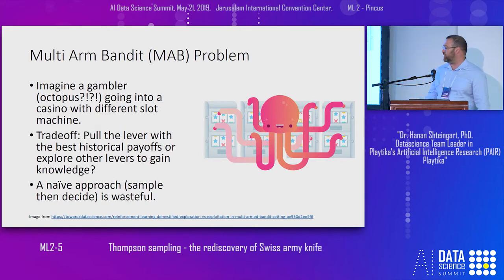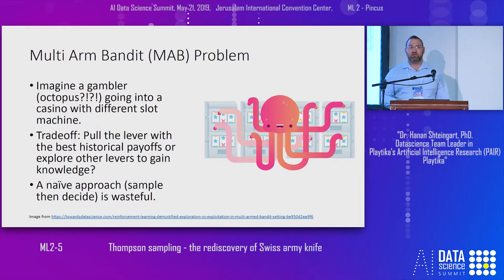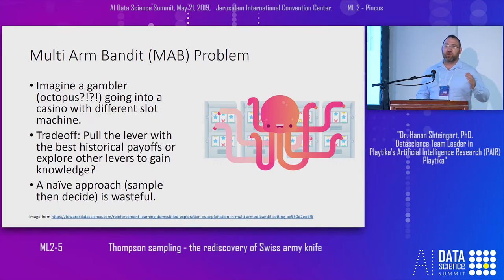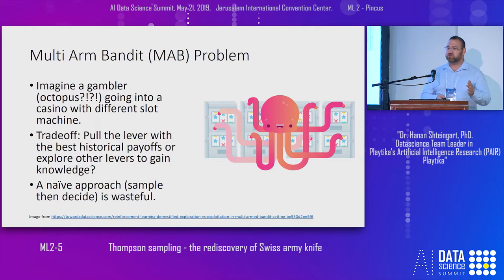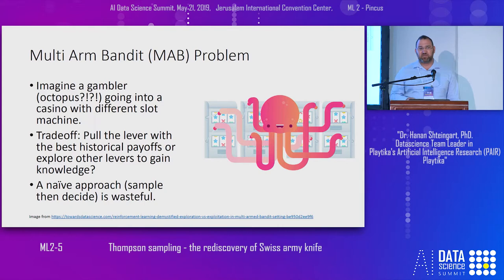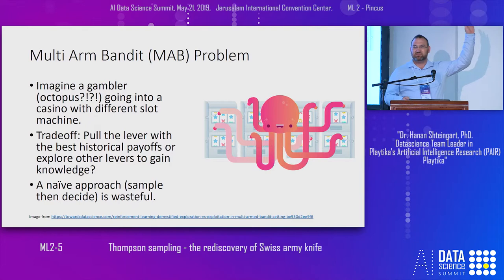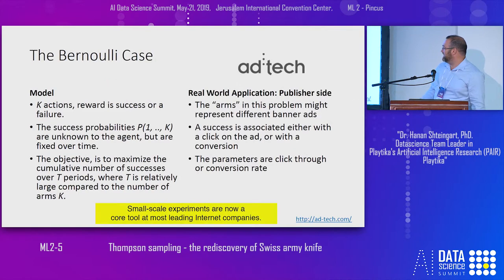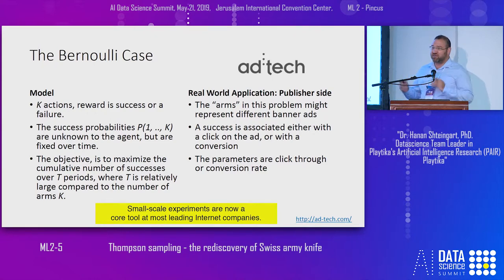A naive approach, also called Follow the Leader or AB testing, is to try each option for a while, understand which one is the best, and then just do that. In theory it can be proved that this is very, very inefficient. So who has done an AB test? Okay — so it's not efficient, what you're doing. You should use Thompson Sampling.